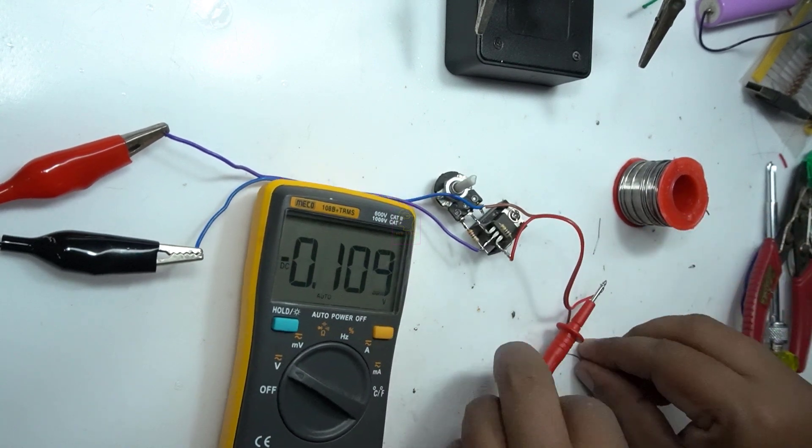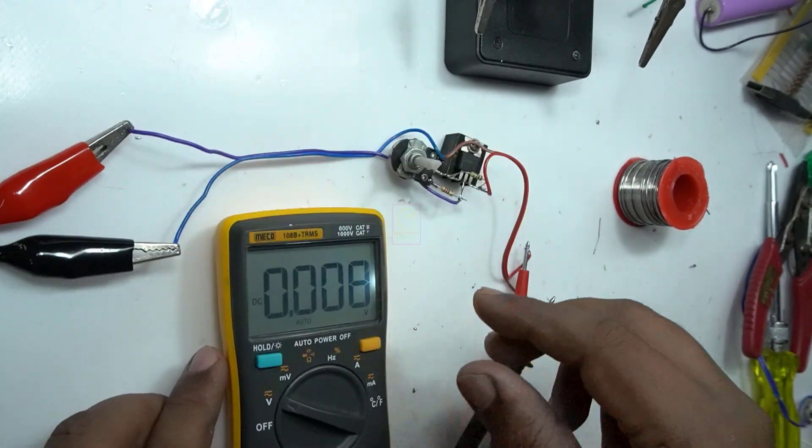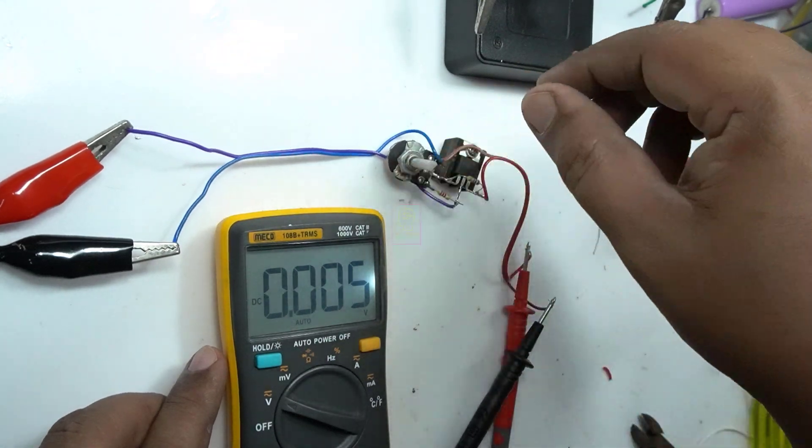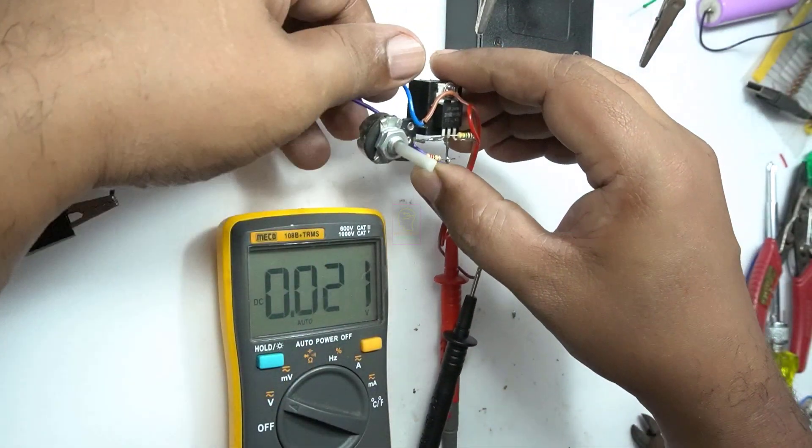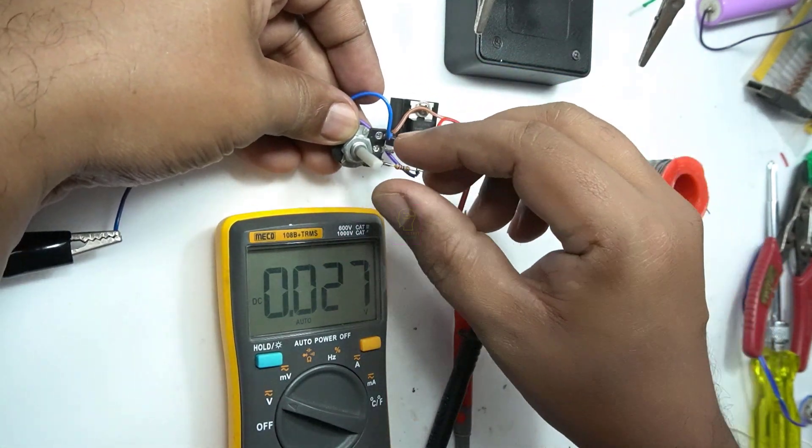I have also connected the output line to the multimeter. The minimum voltage we will get from this circuit is nearly 0 volt. We will increase the voltage by turning the potentiometer.